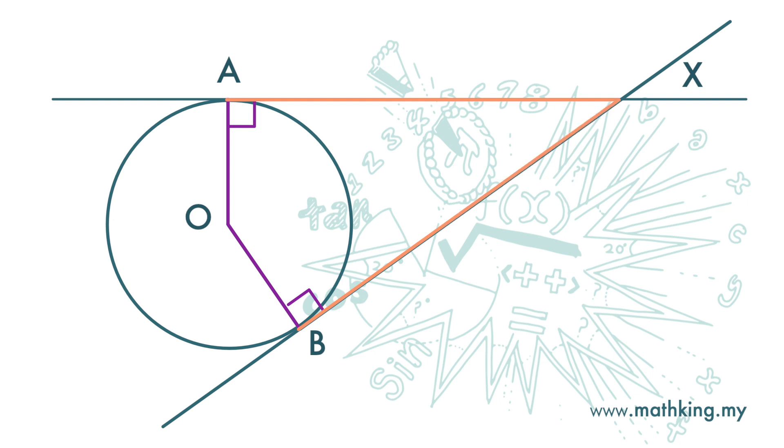This line OX bisects the angle at the center here and the angle at X into two equal halves. So these two angles are equal, and these two angles are also equal.